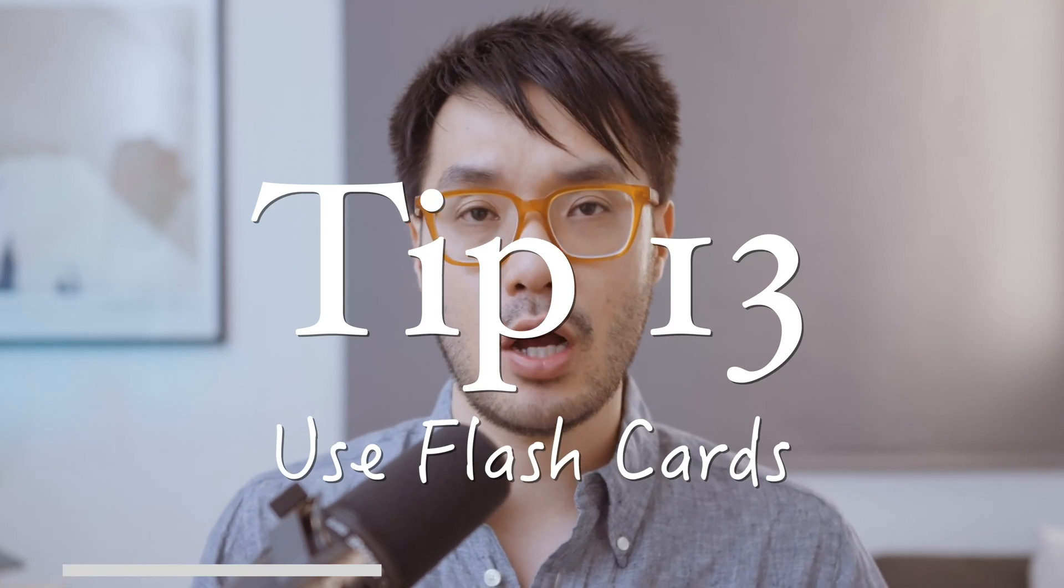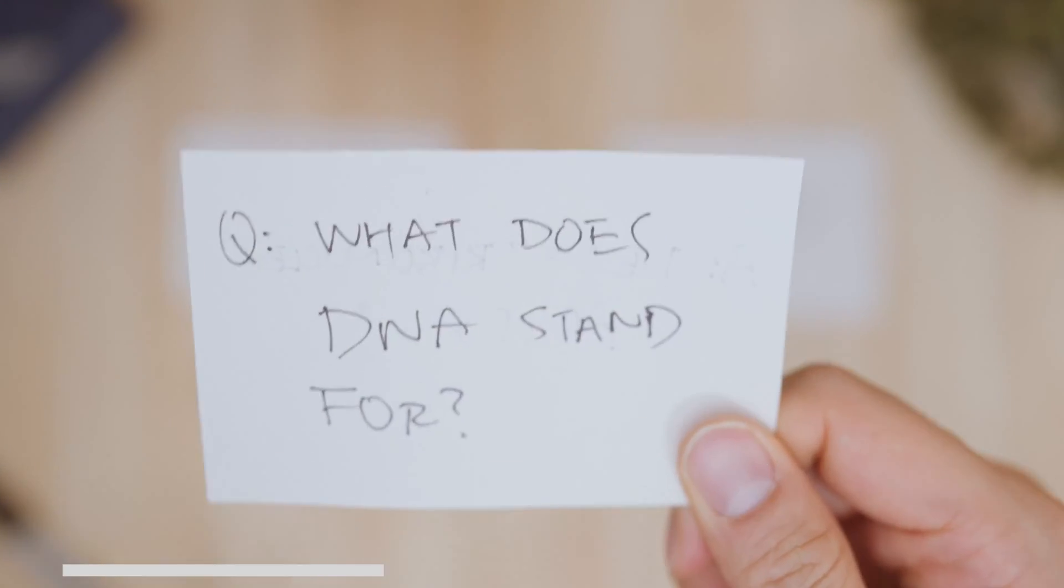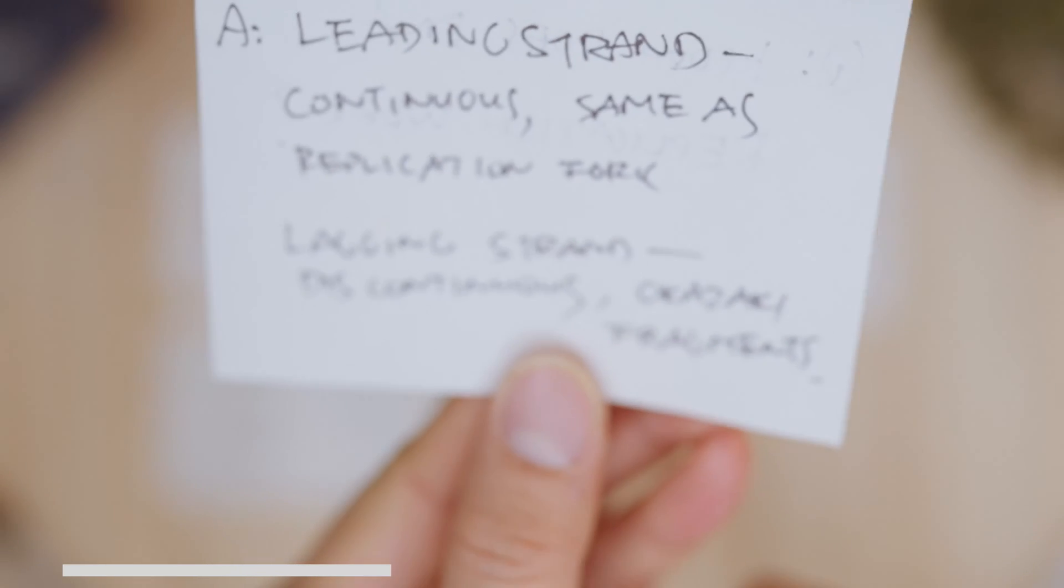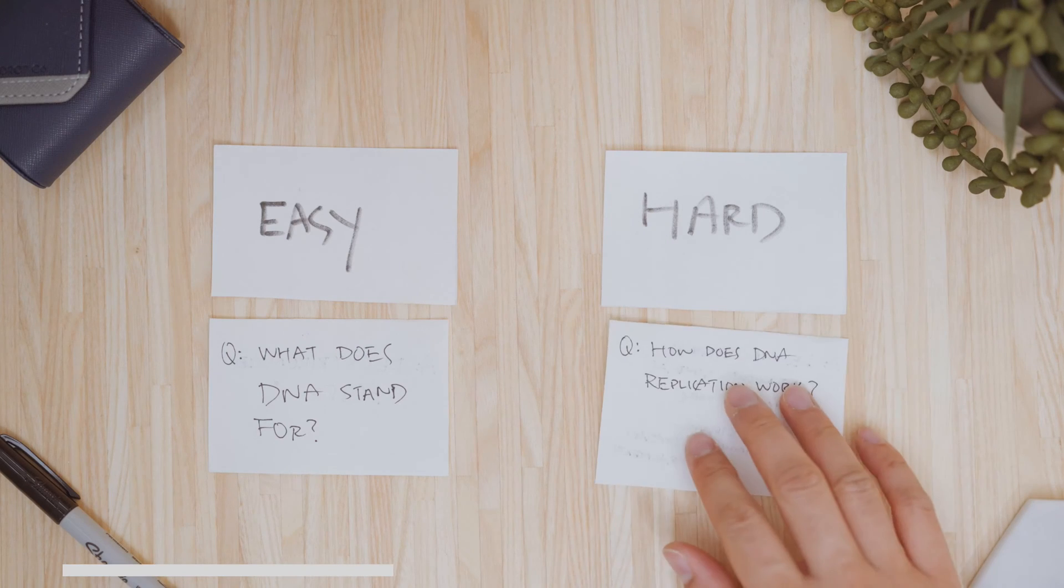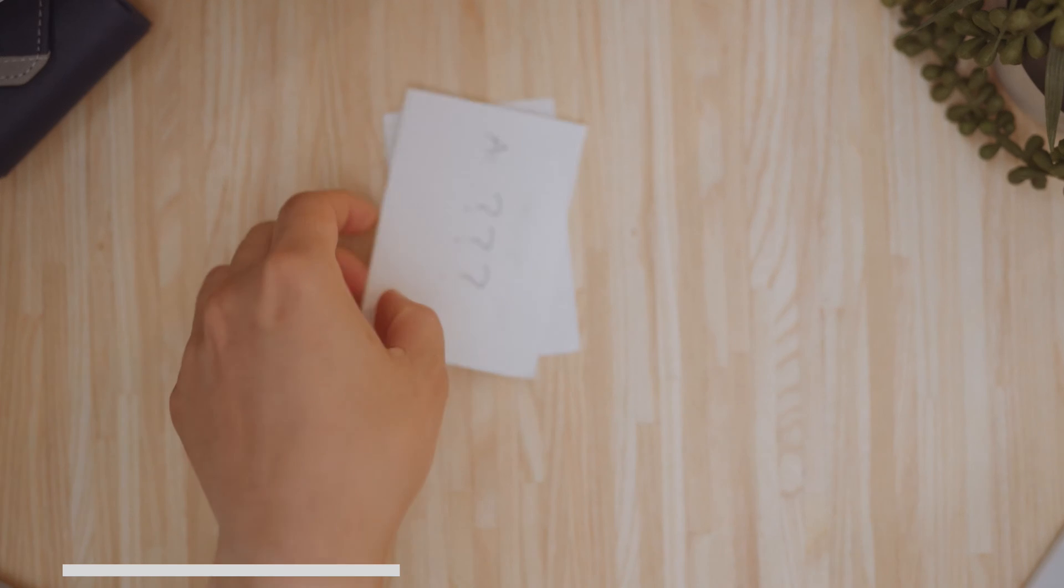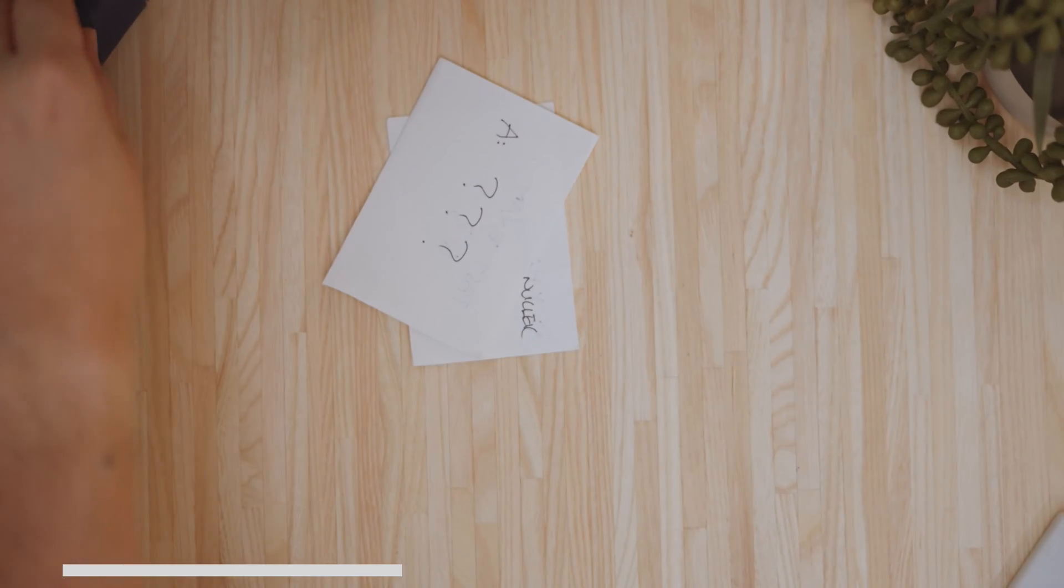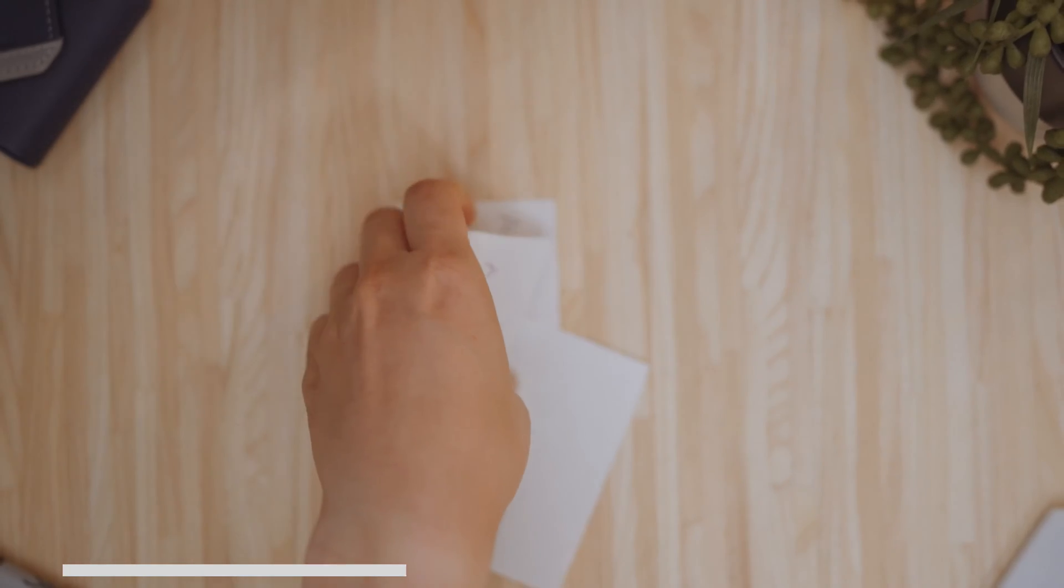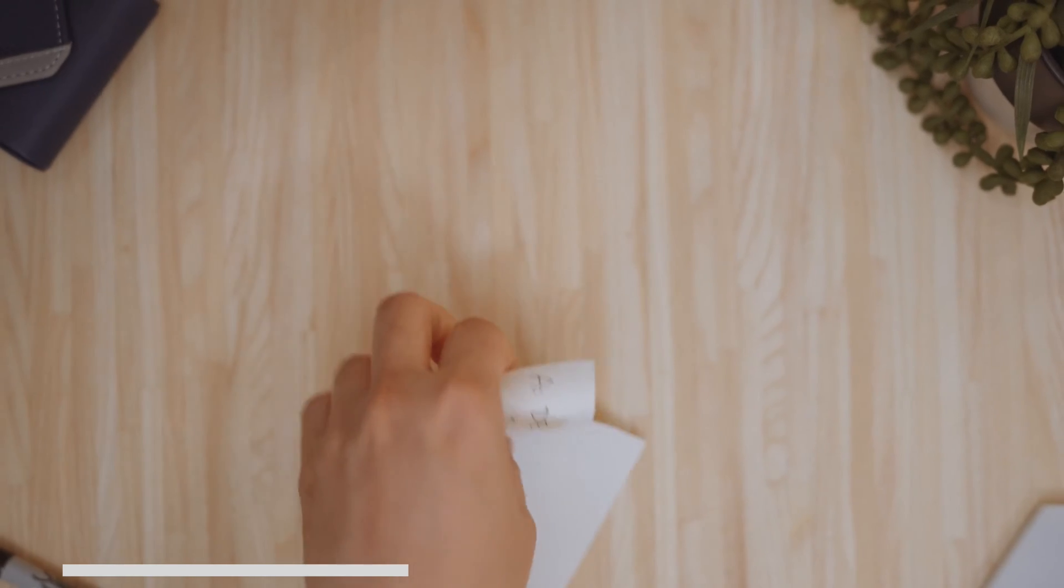Tip 13: use flashcards. Questions on the front, answers on the back. If you get the answer right, put the card in the easy pile. If wrong, put it in the hard pile. Revise the easy pile once a week, revise the hard pile once a day. Tip 14: sharing is caring. Share your flashcards with friends because writing questions and making cards is time-consuming, so if you can make it a group activity that saves everyone time.